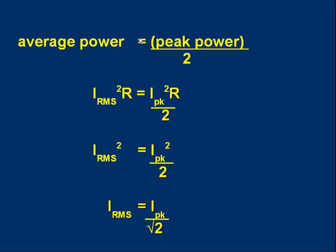Let's see where this factor of root 2 comes from. We know that average power is half the peak power, providing it's a sinusoidal waveform. Average power is I_rms² × R, and peak power is I_peak² × R, so half of that is I_peak² × R / 2.